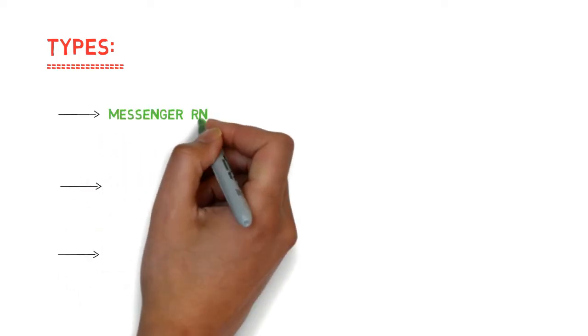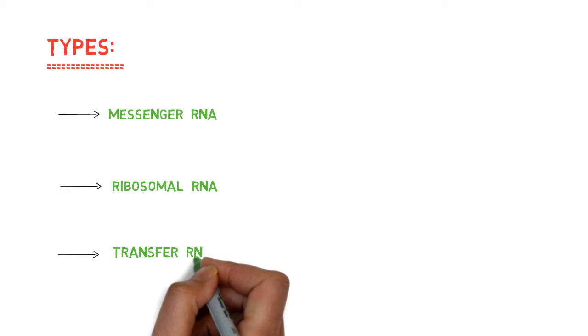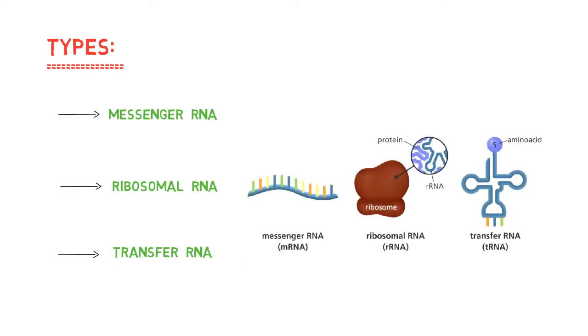RNA has three main types: messenger RNA, ribosomal RNA, and transfer RNA. All these types of RNA are involved in gene expression.